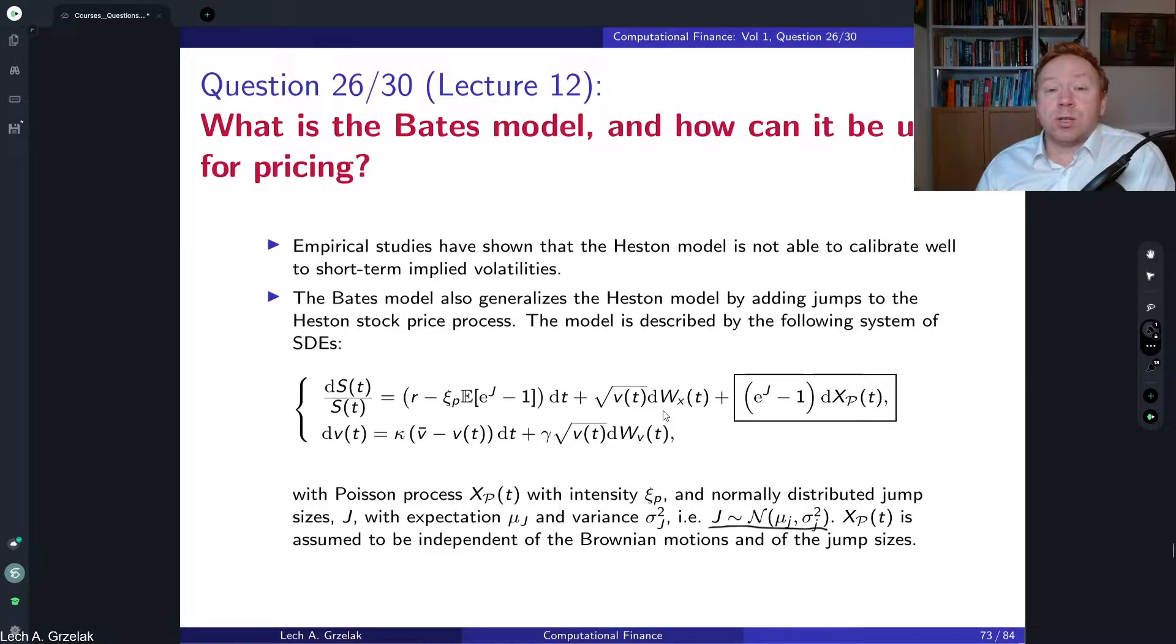What is the motivation for this process? So we understand how this process is derived—we have some correction, deterministic correction for the drift, and then we have a Poisson process with the jump. But what is the added value of this type of model? What happens is that when researchers started investigating the Heston model and its flexibility in terms of calibration to market data, they realized that the Heston model is not able to calibrate options with extremely short maturity.